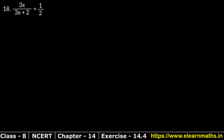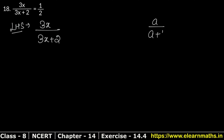Let's do question number 18. Question 18 is: 3x upon 3x plus 2 — does it equal 1 upon 2 or not? Left hand side is 3x upon 3x plus 2. As I told you, this is in the form a upon a plus b, so we cannot split it as a upon a plus a upon b.